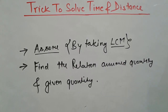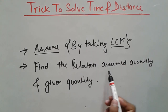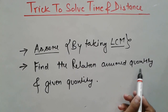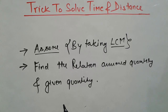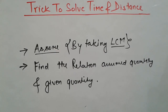Our second step is to find the relation between the assumed quantity and the given quantity. Then we can easily find out the original quantity we are asked to calculate. We will solve some problems that can be easily solved by this trick. Let's solve some problems.